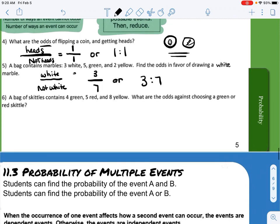And then six. A bag of Skittles contains four green, five red, and eight yellow. What are the odds against choosing a green or red Skittle? So we want odds against instead of odds in favor. So we want not green or red on top and we want green, red on bottom.